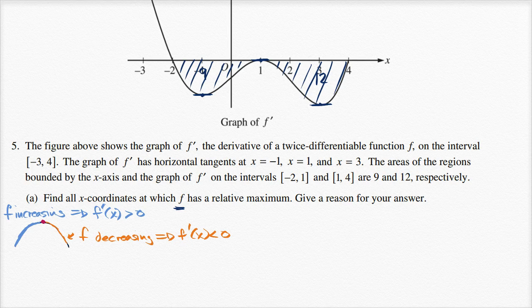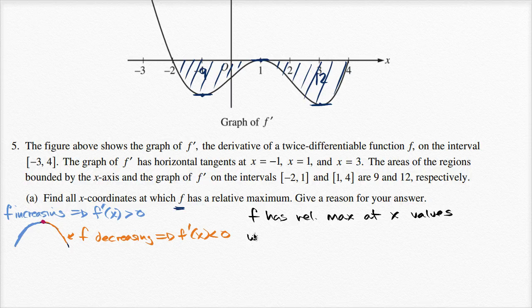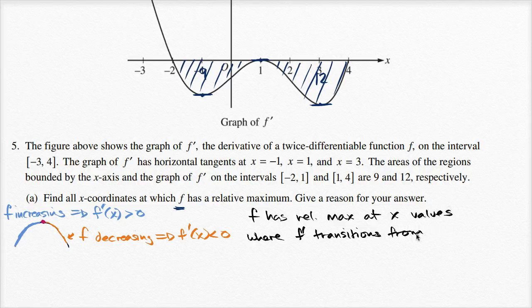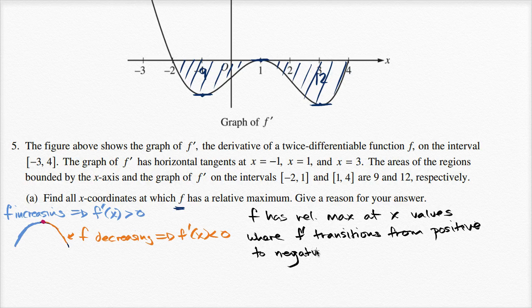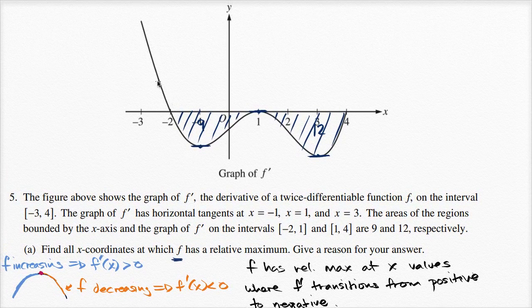So f has a relative maximum at x-values where f prime transitions from positive to negative. Where do we see f prime transitioning from positive to negative? Looking at the graph, we see it happening once: f prime is positive, positive, positive, and then it goes negative, negative, negative.